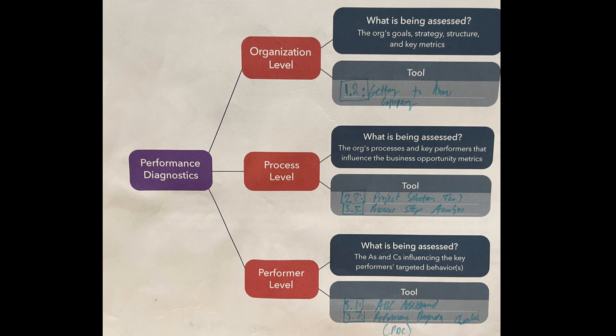The functional assessment begins at the organizational level, where you get to know the company by assessing the organization's current goals, strategies, structure, and key metrics. Then you move to the second level of the organization. Remember, for each level you are answering what is being assessed — performance in one area of an organization affects performance in other areas of that same organization.